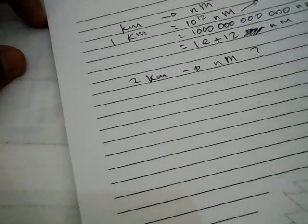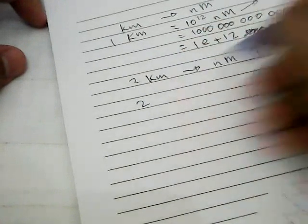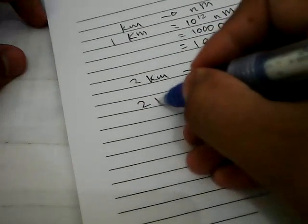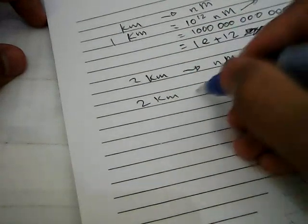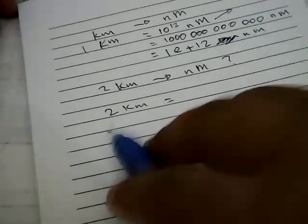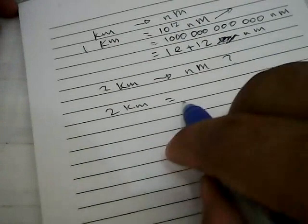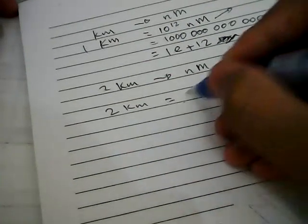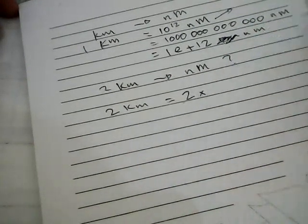We will solve this problem now. You need to write 2 kilometers and give it an equal sign. It equals 2, then you put this 2 and multiply it with 10 power 12 nanometers.